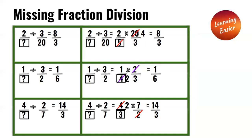2 over something divided by 3 over 20 is equal to 8 over 3. Applying KCF: 2 over something times 20 over 3. So 2 times 4 is equal to 8. In order for 20 to become 4 when multiplying fractions, the missing number has to be 5, because 20 divided by 5 is equal to 4.